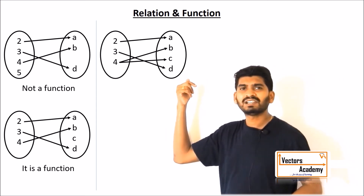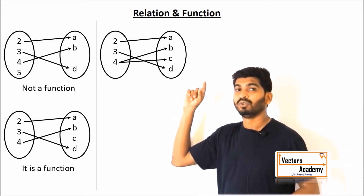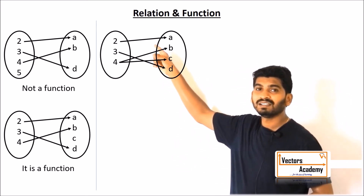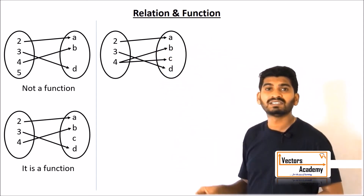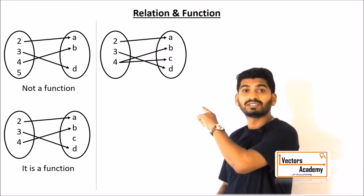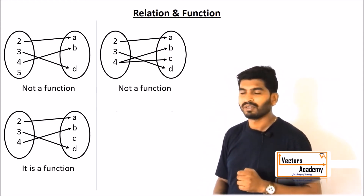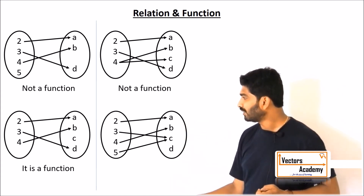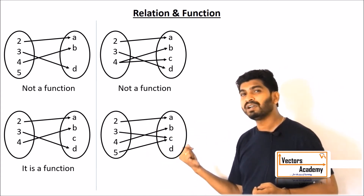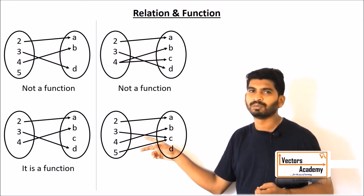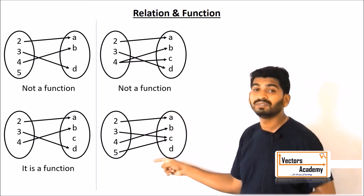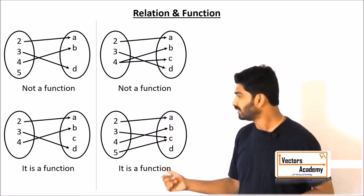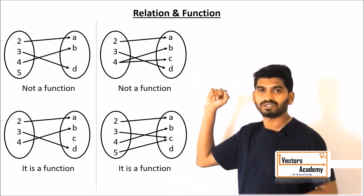In the next example, is it a function? No, it is not a function, because one of the elements in the domain is connected to two elements in the range — that is not a unique connection. In the following example, one element in the range is connected to two elements in the domain, which is fine. We are only concerned with elements in the domain, not the range. So this is a function, whereas the previous one is not.